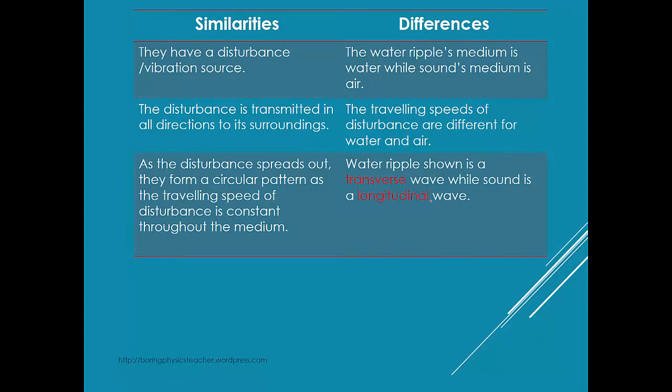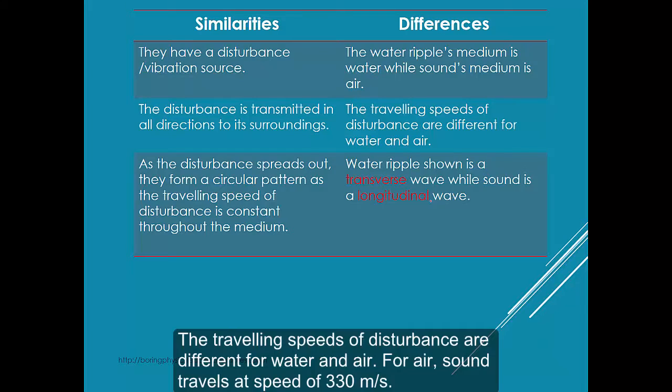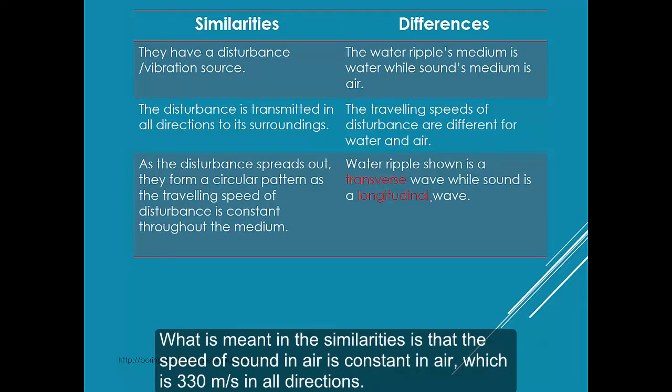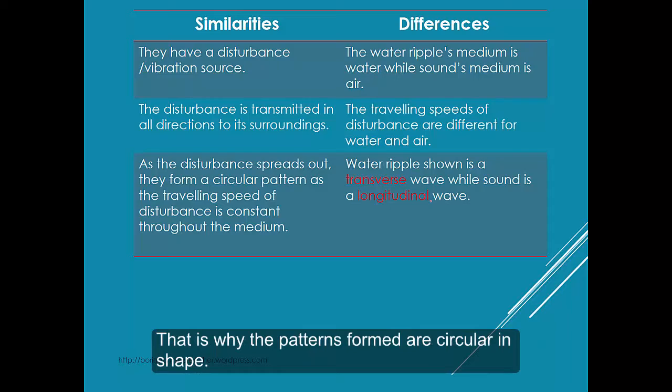And what are their differences? The water ripple's medium is water, while sound's medium is air. The travelling speed of the disturbance are different for water and air. For air, sounds travel at a speed of roughly about 330 meters per second, and the water ripple speed is much slower. What is meant in the similarities is that the speed of sound in air is constant in air, which is always 330 meters per second in all directions. That is why the patterns formed are circular in shape.